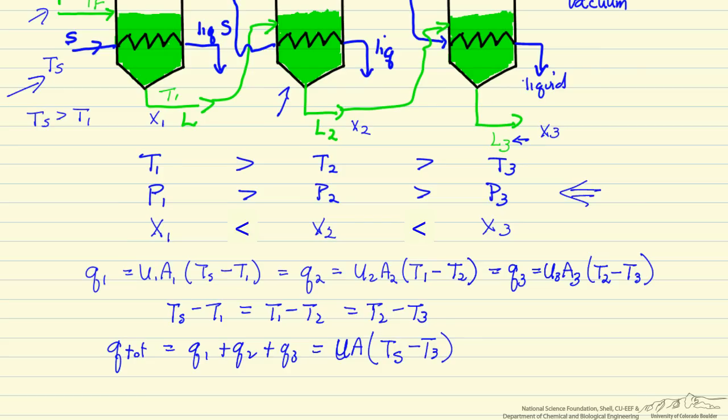The triple effect evaporator is best used when the feed comes in hot, so we don't need to use much steam energy to heat the feed, and when the concentrated product liquid has some temperature sensitivity as concentration increases — in which case we prefer to operate at the lower temperatures in the later effects. The actual calculations are very similar to those for a single effect evaporator.